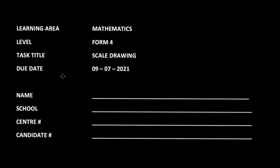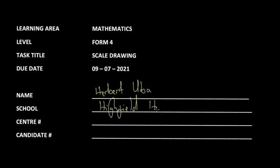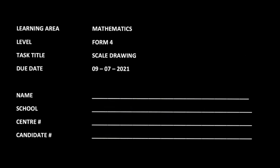An important step students often forget is filling in their personal details. Write your name — for example, 'Habit Tuber' — your school, such as 'Highfield High School,' and your centre number, for example '2035.' Make sure this part is completed because it ties you to the colour and shows that you are the one who submitted this work.